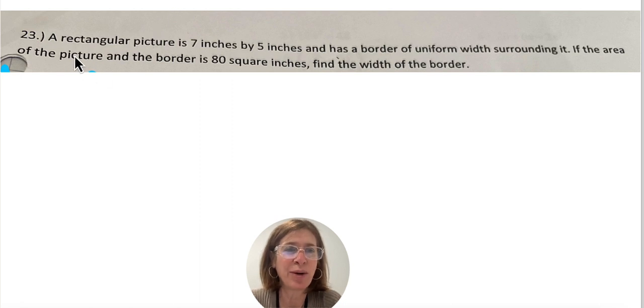So here we have a question, it says a rectangular picture is 7 inches by 5 inches and has a border of uniform width surrounding it. If the area of the picture and the border together is 80 square inches, find the width of the border.